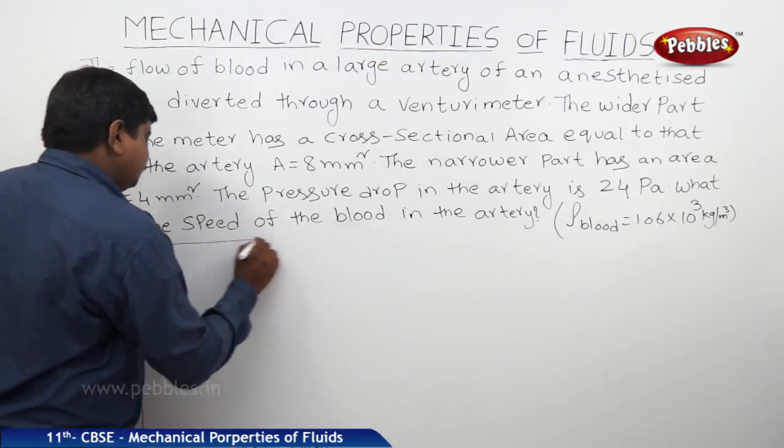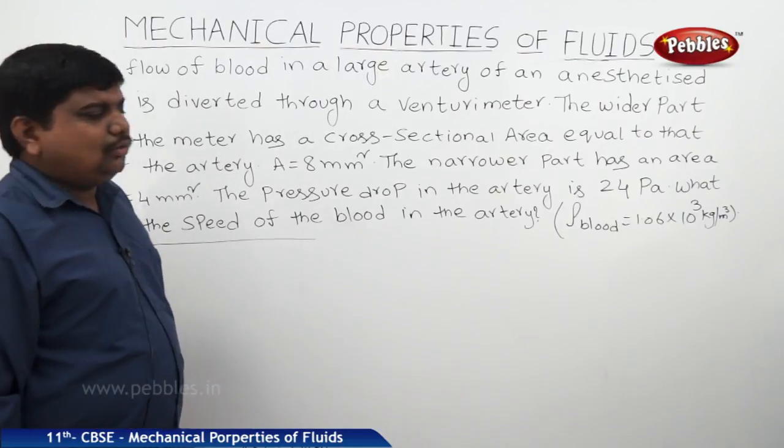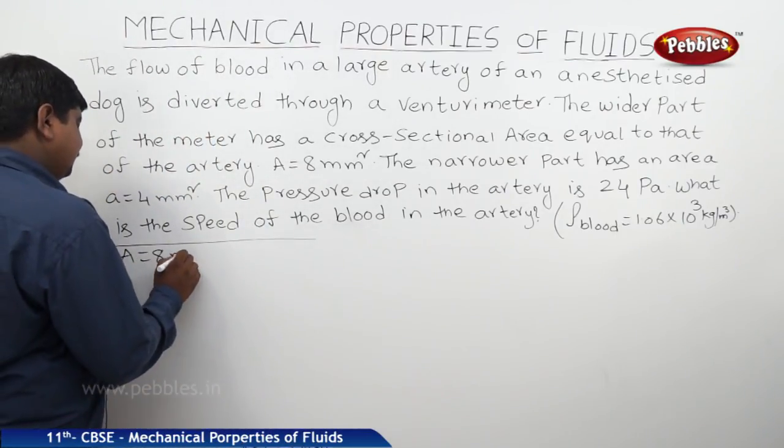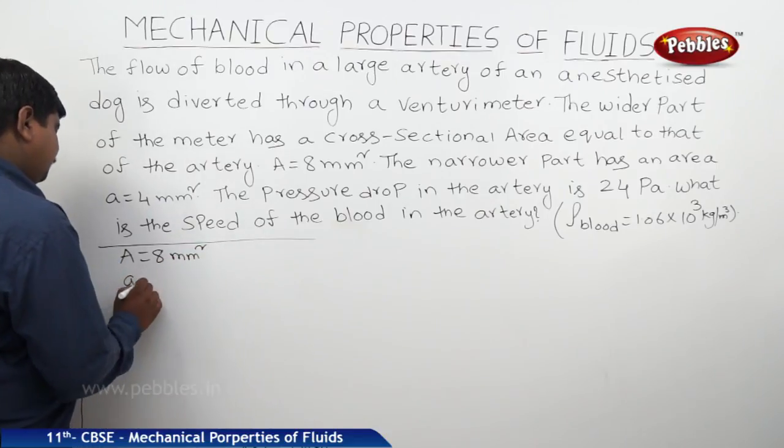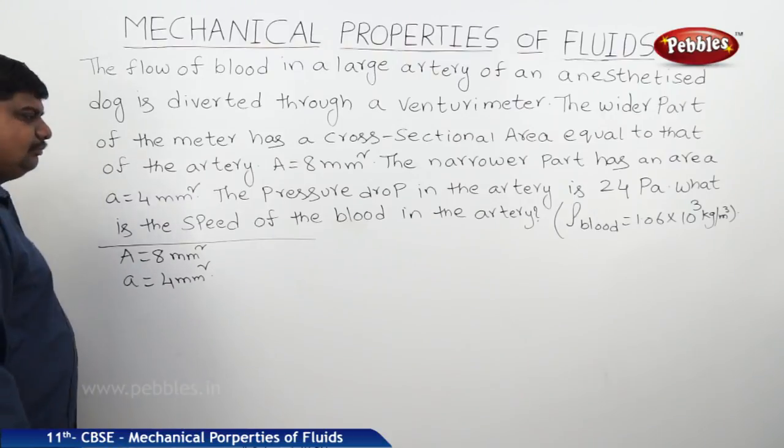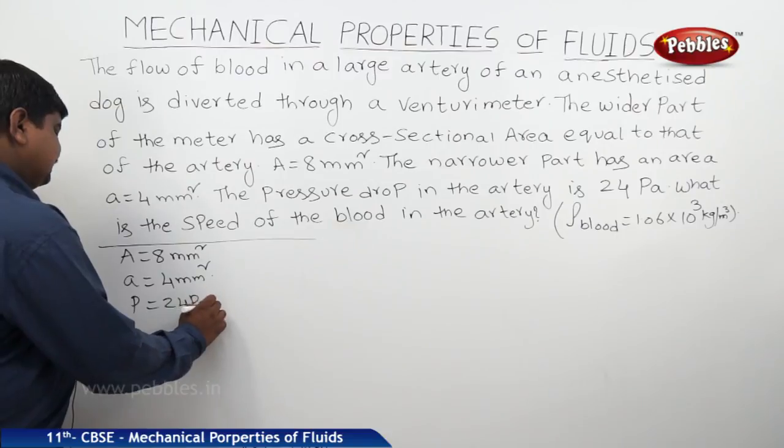Therefore, capital A, the area at one end, is equal to 8 mm². Small a is equal to 4 mm². Pressure drop P is equal to 24 Pa. Now we should find out the velocity.